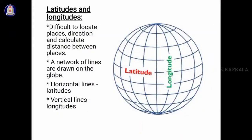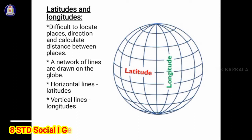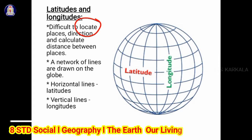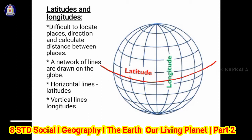Students, how do we understand the location between different places — maybe direction and even the distance between different places over this earth? Because the shape of the earth is round, it becomes difficult for us to locate different places. For example, here is India and here is Europe — how do you calculate the distance between these two places? To know the position, distance, and even the direction — from west to east, north to south — we need a system.